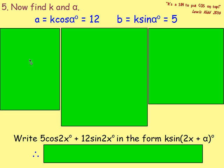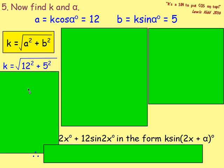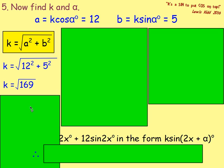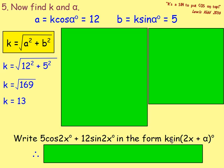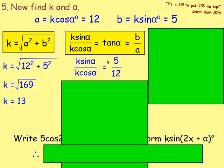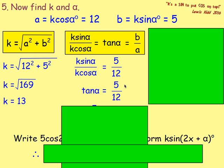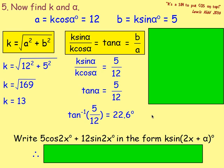From there we do it the exact same way. The value of k is the square root of a² plus b², so it's the square root of 12² plus 5², which is the square root of 144 plus 25, which is 169. Square root that and you get 13 — so k equals 13. To get alpha, k·sinα over k·cosα equals tanα, which equals b over a. So tanα equals 5 over 12. Go to the calculator, work out tan⁻¹(5/12), and you get 22.6 degrees.